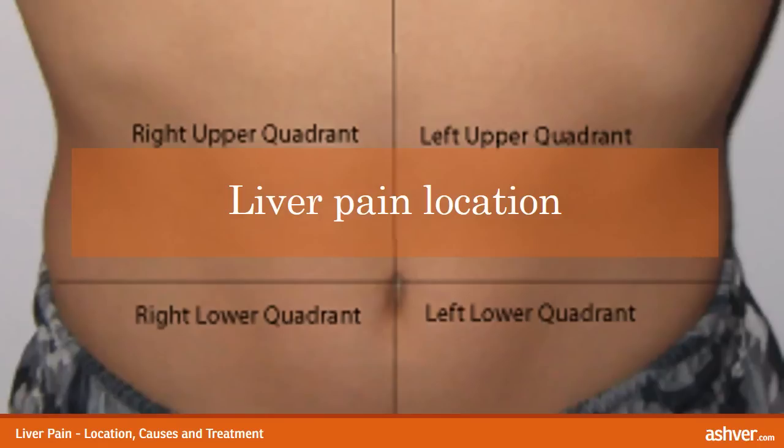The pain can often be confused with generalized abdominal pain, backache, or kidney pain unless it specifically occurs in the right abdomen. Pain in the upper right quadrant may also occur due to formation of gallstones, abdominal disorders, pancreatitis, or may also be intestinal pain. In many instances, liver pain may be perceived as pain in the right shoulder. It is therefore necessary to always seek medical help for diagnosing the actual cause of the pain.